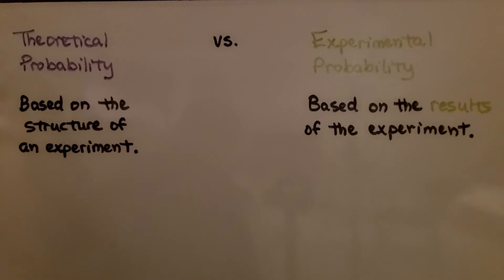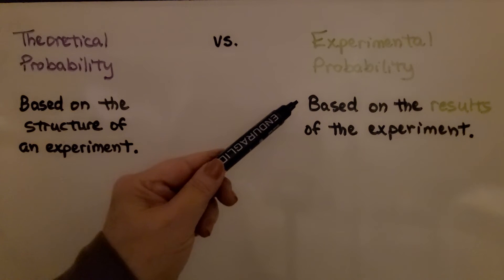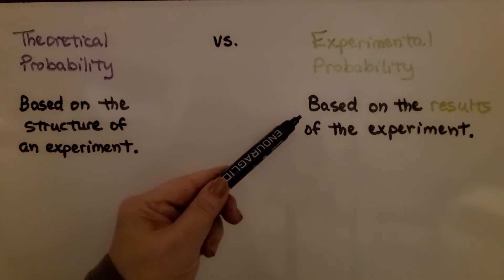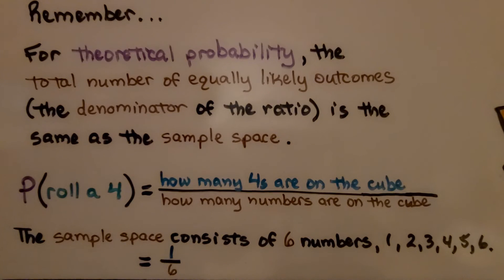Theoretical probability is based on the structure of an experiment, whereas experimental probability is based on the results of the experiment. For theoretical probability, the total number of equally likely outcomes — that's the denominator of the ratio — is the same as the sample space.